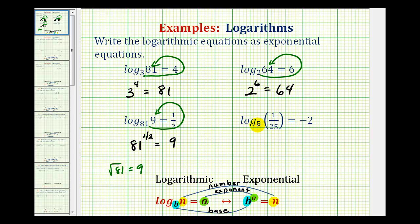For our last example, we have log base five of one-twenty-fifth equals negative two. So our base is five. The exponent is negative two, and the number is one-twenty-fifth, which again is correct.